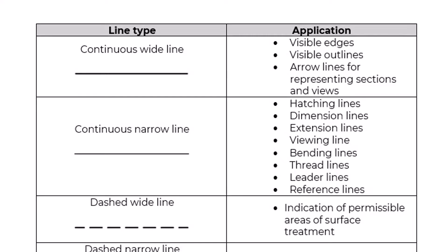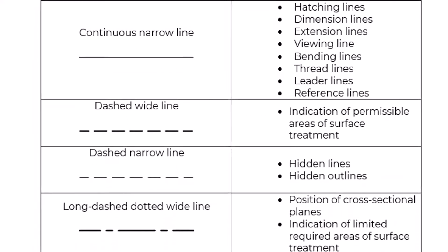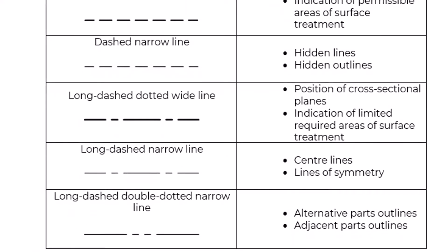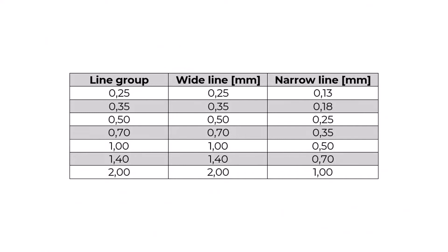Dashed wide line is used for indication of permissible areas of surface treatment. Dashed narrow line is used for hidden lines and hidden outlines. Long dashed dotted wide line is used for position of cross-sectional planes and indication of limited required areas of surface treatment. Long dashed narrow line is used for center lines and lines of symmetry. CAD software already defines the type of lines based on the preferred standard, but if you need to adjust the type of lines and thickness, you can change them in software settings.